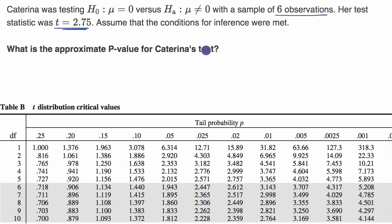Pause this video and see if you can figure it out. Let's remind ourselves what's going on here. There's some population. She has a null hypothesis that the mean is equal to zero, but the alternative is that it's not equal to zero.